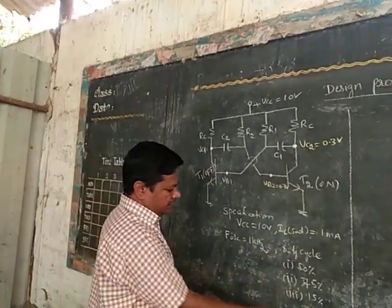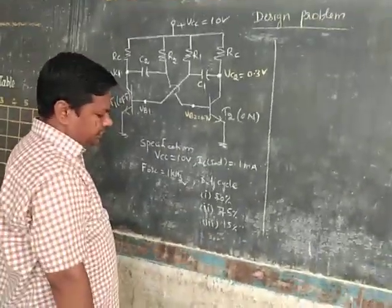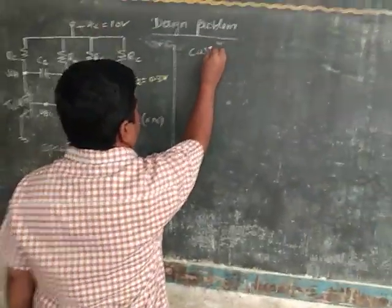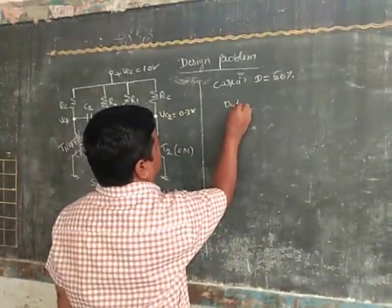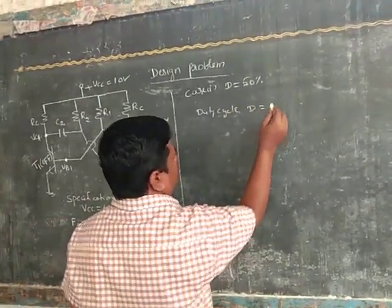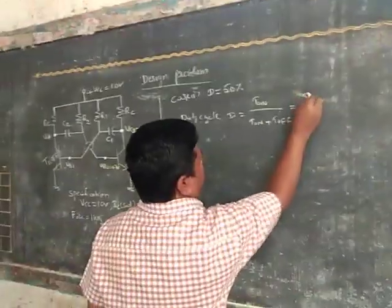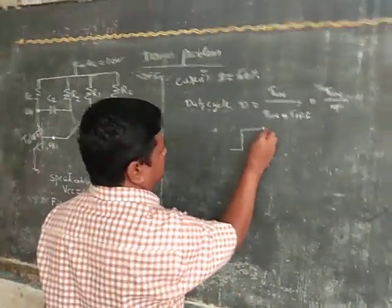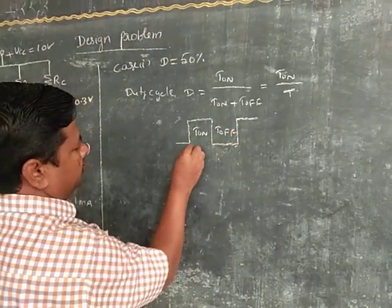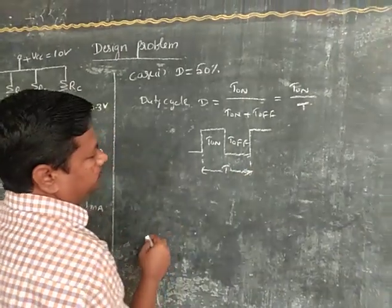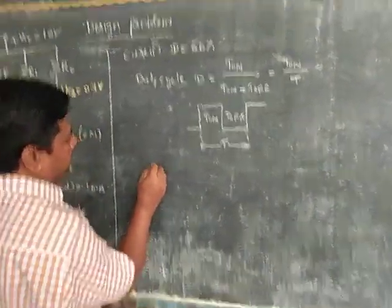Calculate the resistor and capacitor values for case 1: 50%, case 2: 75%, case 3: 15%. Computing case 1 — duty cycle D is equal to 50%. Duty cycle is equal to T_on divided by (T_on plus T_off), that is equal to T_on divided by total time period T. Duty cycle 50% means that is a symmetrical square wave.